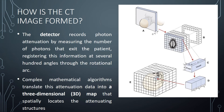So how is the CT image formed? The detectors record photon attenuation by measuring the number of photons that exit the patient and registering this information at several hundred angles throughout the rotational arc. The X-ray source and the detector are both rotating around the patient, so multiple exposures are made from different angles and captured by the detector. These are then combined using a complex mathematical algorithm, translating the data into a three-dimensional map that constitutes the image we see.